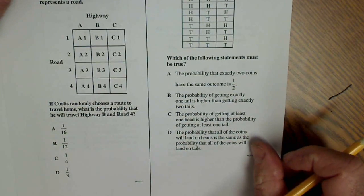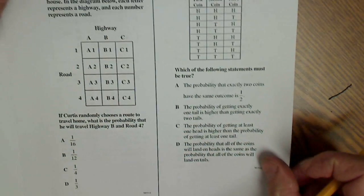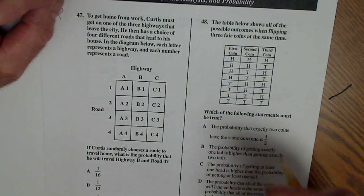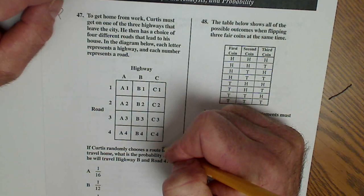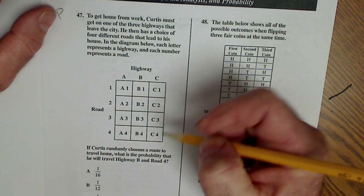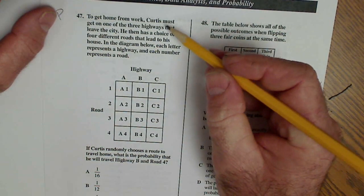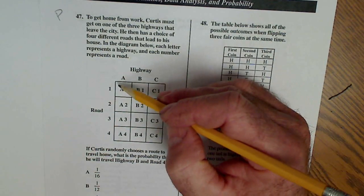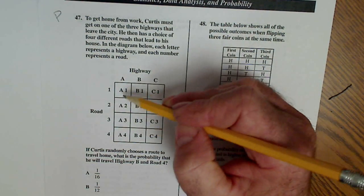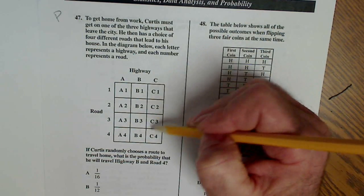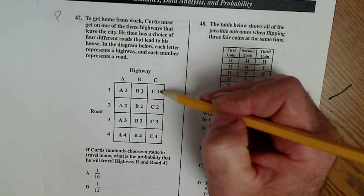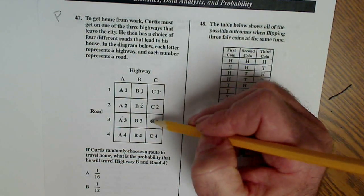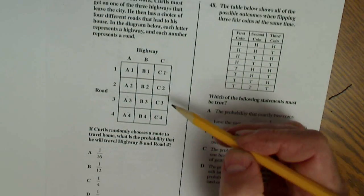We have another page in the statistics, data analysis, and probability. This is kind of a really long-looking problem, but surprisingly easy. This is a probability problem. Curtis has three ways to go home, three highways and four roads. So there's a total possible outcome is 12. One, two, three, four, five, six, seven, eight, nine, ten, eleven, twelve. So there's 12 possible outcomes.